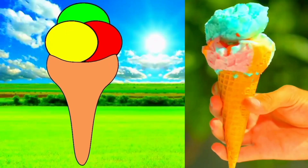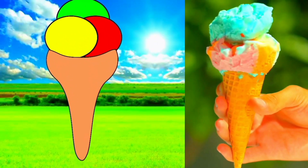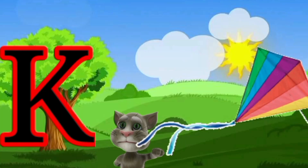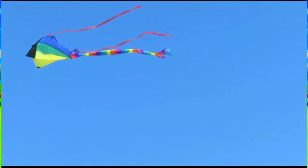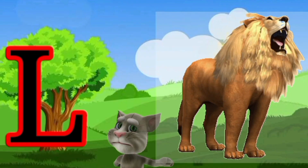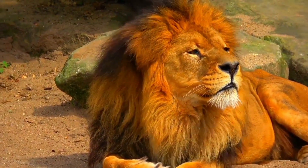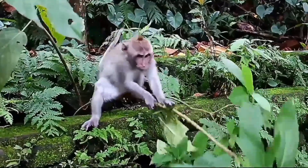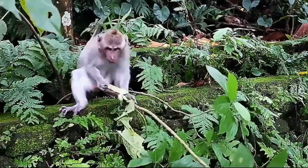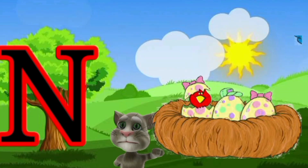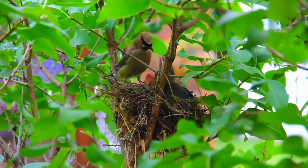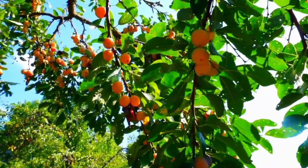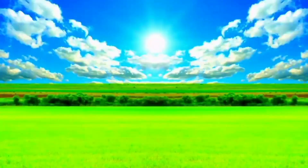I for Ice Cream. J for Joker. K for Kite. L for Lion. M for Monkey. N for Nest. O for Orange. P for Parrot.